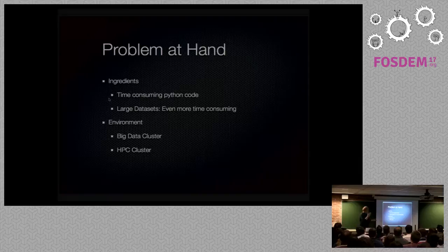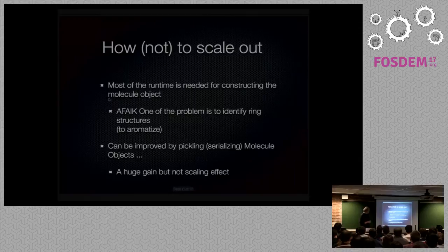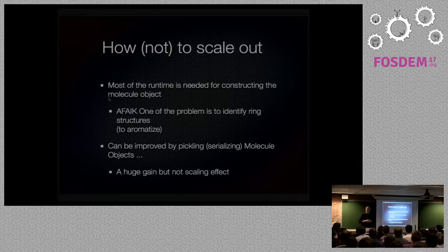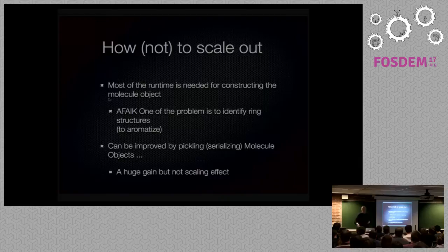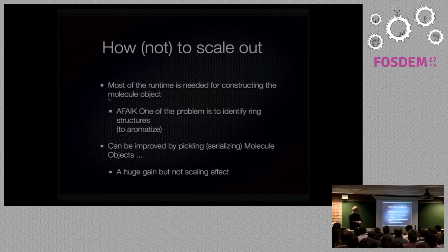So that's always the same thing: we have the ingredients — a time-consuming job and a large dataset — and we want to make it fast. The environment we wanted to use is a big data cluster or an HPC cluster — we have both. One optimization: the reading and parsing of SMILES notation and constructing the molecule object is the most time-consuming part. We can read it once and serialize the molecules — that's called pickling in Python. Dump it to a file so you don't have to reconstruct the molecules every time. That's a huge gain in runtime, but it doesn't scale anything.